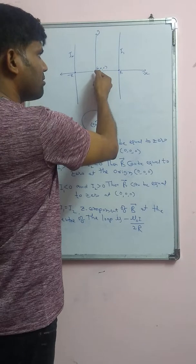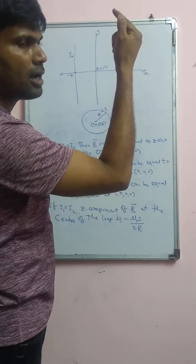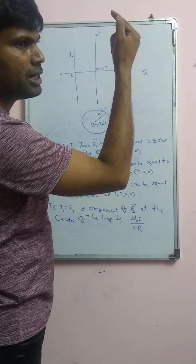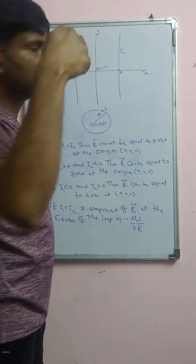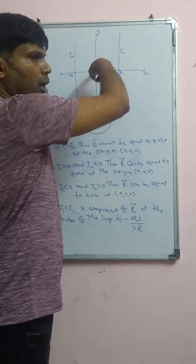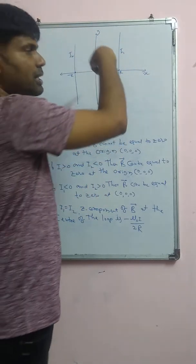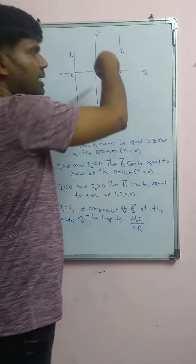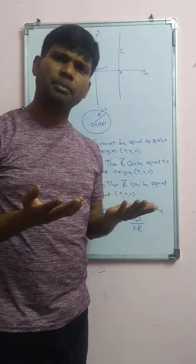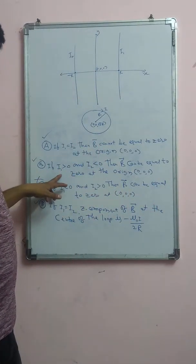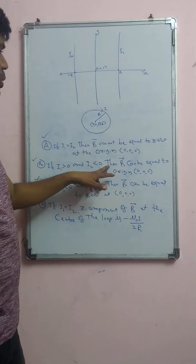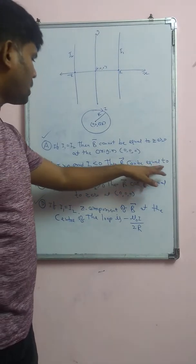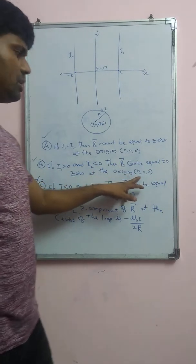The magnetic field from the two wires is along the positive z direction, while the magnetic field from the circular loop is along the negative z direction. There is a possibility that for some values of i1, i2, and i, the magnetic field can be zero. So if i1 greater than 0 and i2 less than 0, then B can be equal to zero at the origin.